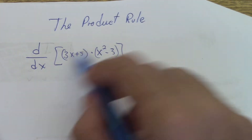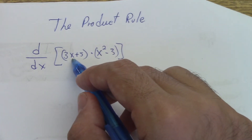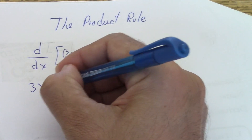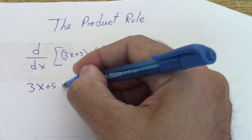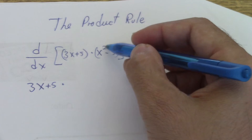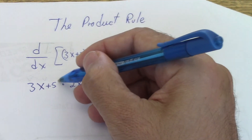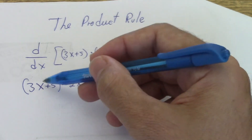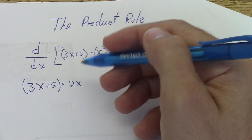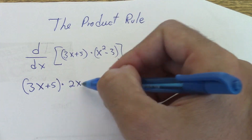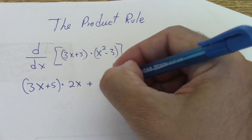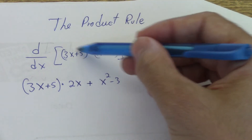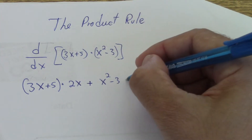All variables agree, so what we do is — there is a rule that says we write the first one, which is (3x + 5), times the derivative of the second one. The derivative of that is just 2x. We have to write a parenthesis here, because otherwise it means just the 5 times 2x — it's everything times 2x. Then the first times the derivative of the second one, plus the second one (x squared minus 3) times the derivative of the first. The derivative of this is only 3, so times 3.